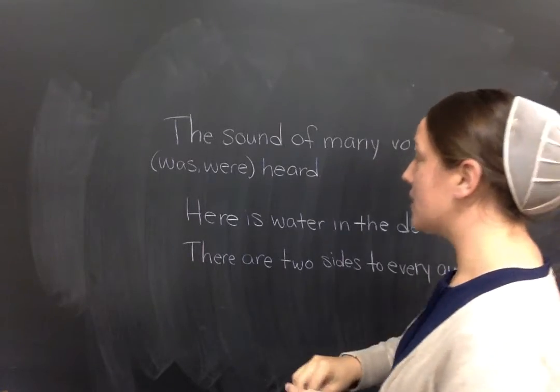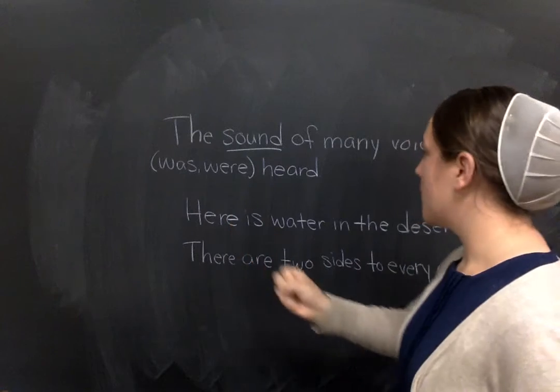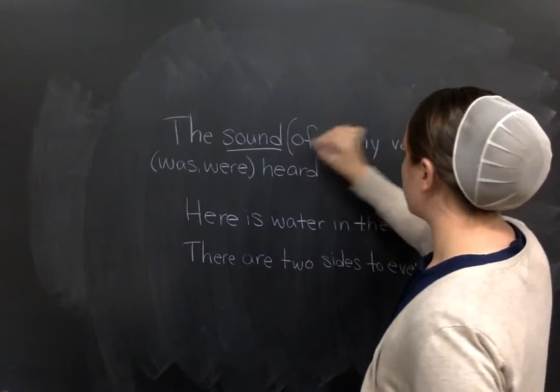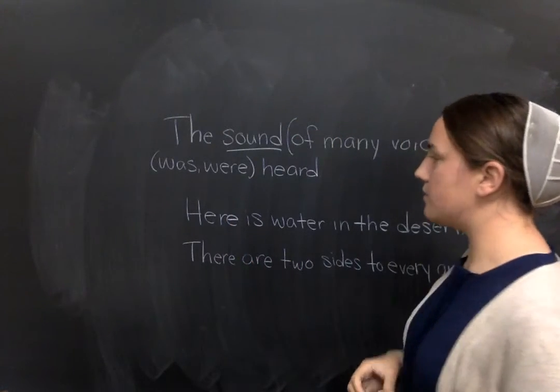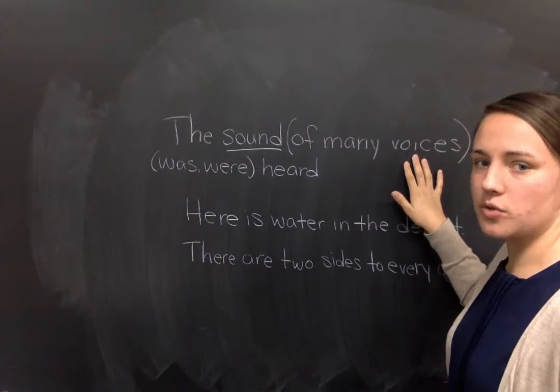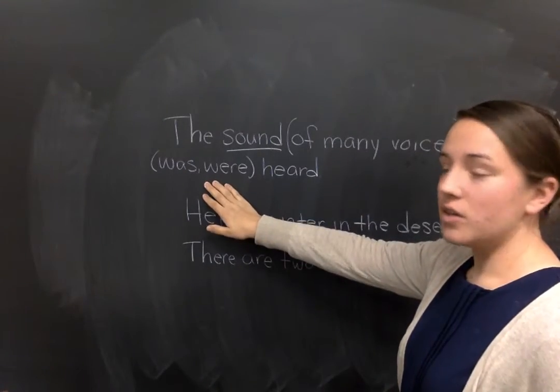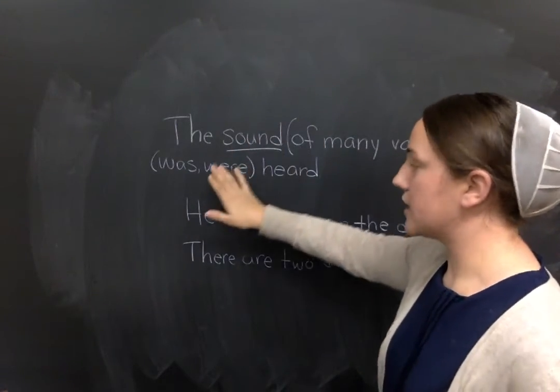Okay. So, sound is our subject. One of these will be our verb. But, notice this prepositional phrase, of many voices. So, do we take our object in the prepositional phrase and make our verb agree with that? Or, do we make our subject and verb agree?